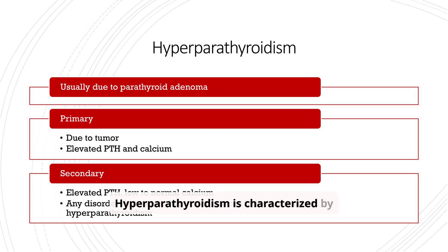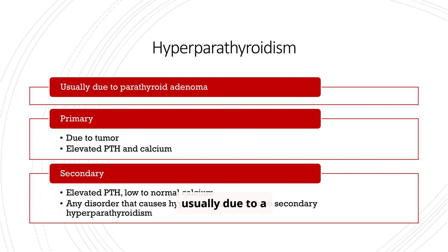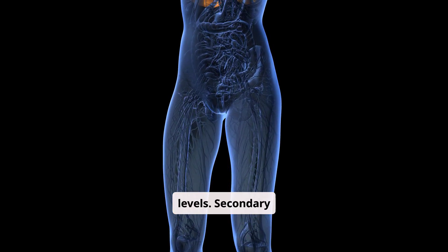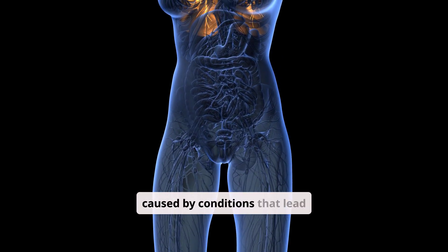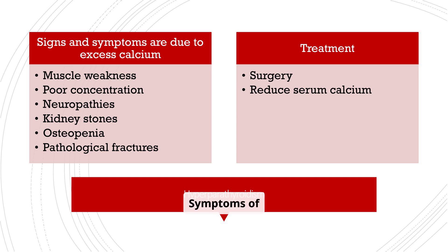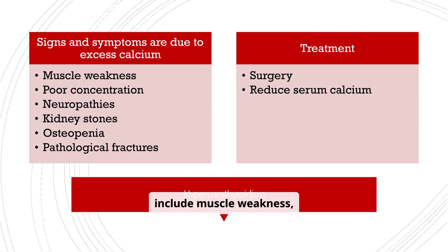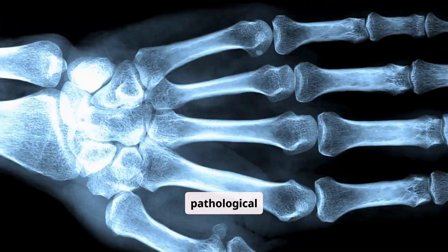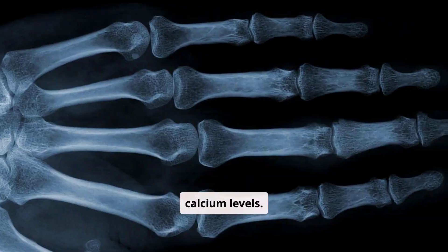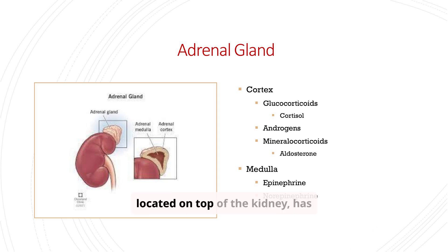Hyperparathyroidism is characterized by elevated PTH levels. Primary hyperparathyroidism is usually due to a parathyroid adenoma, leading to elevated PTH and calcium levels. Secondary hyperparathyroidism is caused by conditions that lead to hypocalcemia, such as chronic kidney disease. Symptoms are primarily due to excess calcium and include muscle weakness, poor concentration, neuropathies, kidney stones, osteopenia, and pathological fractures. Treatment options include surgery and measures to reduce serum calcium levels.